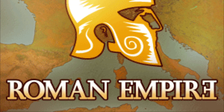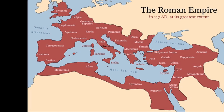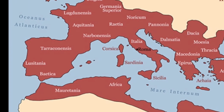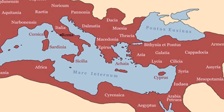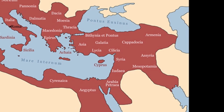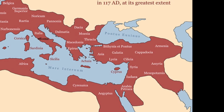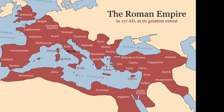Before I tell you why the Roman Empire fell, I'm going to tell you what it was. The Roman Empire was a mass kingdom that spanned from northwestern Europe to the near east and encompassed all the lands of the Mediterranean. It lasted about 1,000 years, from 27 BCE to 476 AD.